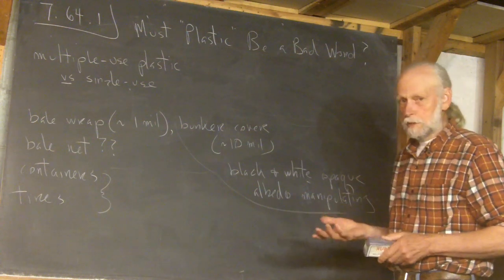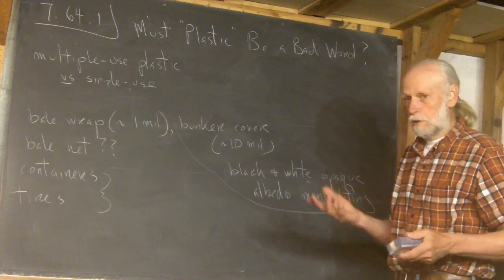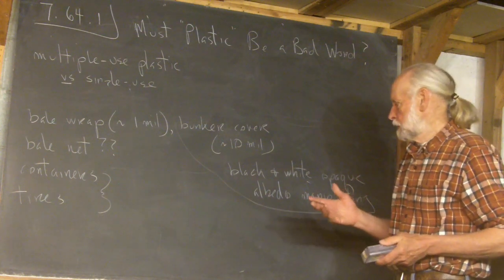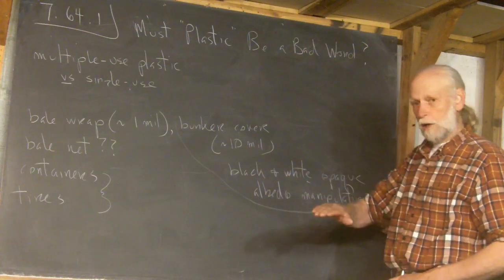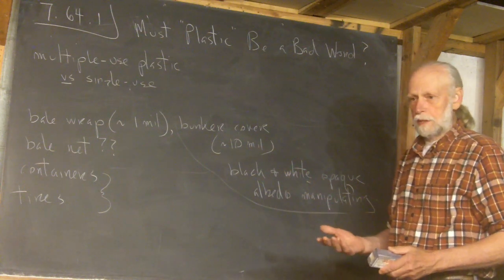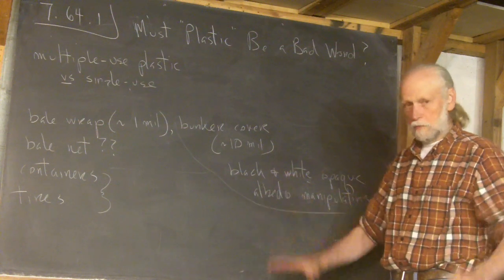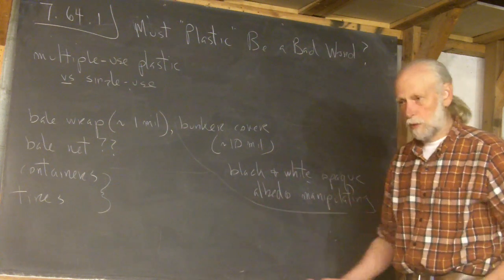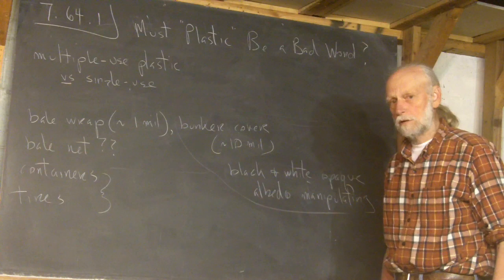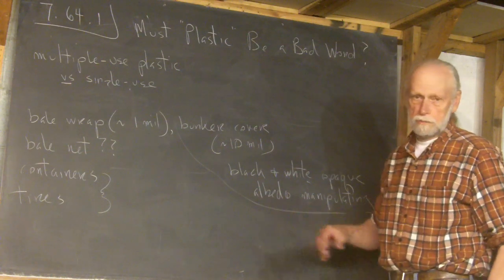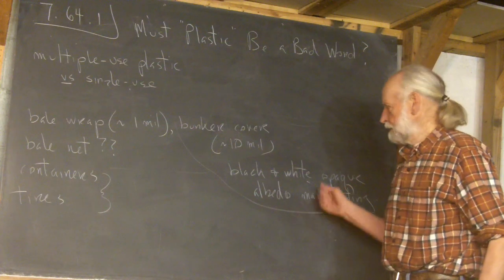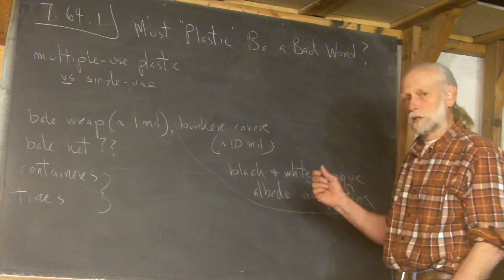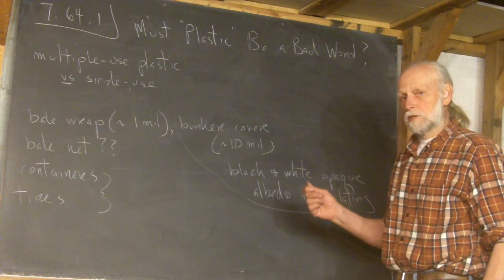It's black on one side and white on the other. You can get it all black. I don't know if you can get it all white. But black on one side and white on the other. And so it's albedo manipulating. If it's black on the ground, it's going to absorb heat. If you flip it over to the white side, it's going to reflect that heat off. That's what albedo is basically. It's reflectivity of a surface. And that becomes very interesting in terms of climate change.